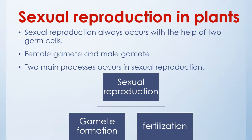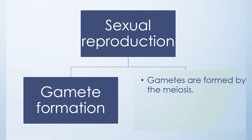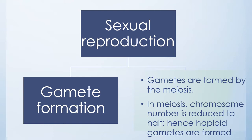In sexual reproduction, the first process is gamete formation. Gametes are formed by the meiosis process. We studied meiosis in Chapter Two — Life Processes in Living Organisms, Part One. In meiosis, the chromosome number is reduced to half; hence haploid gametes are formed.